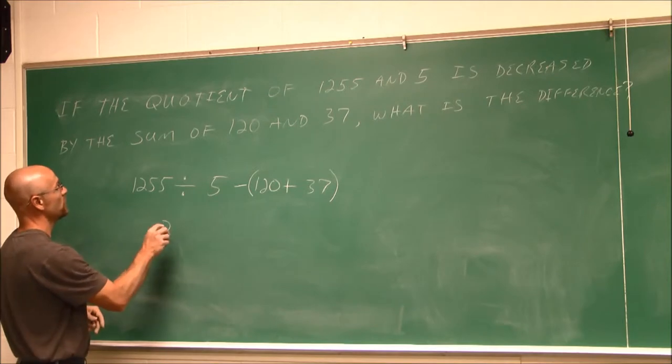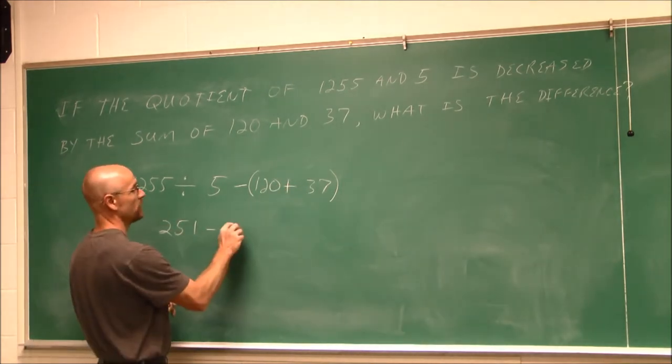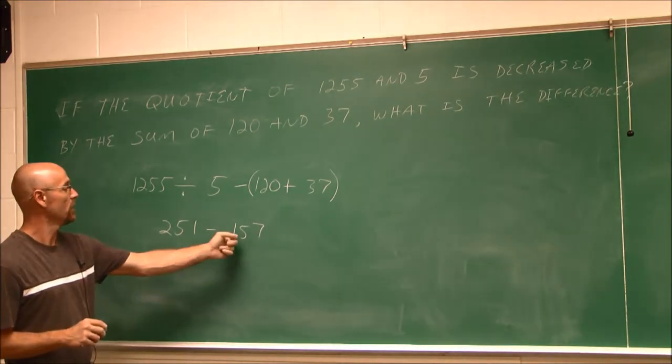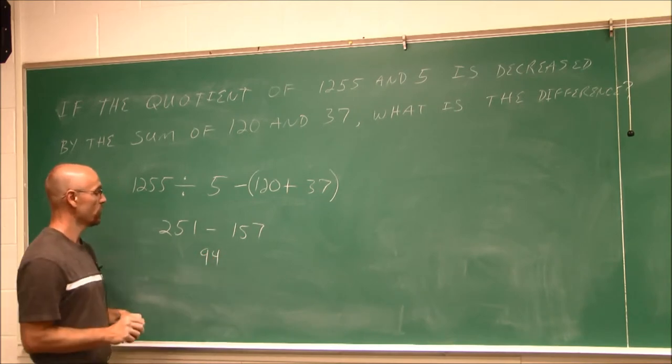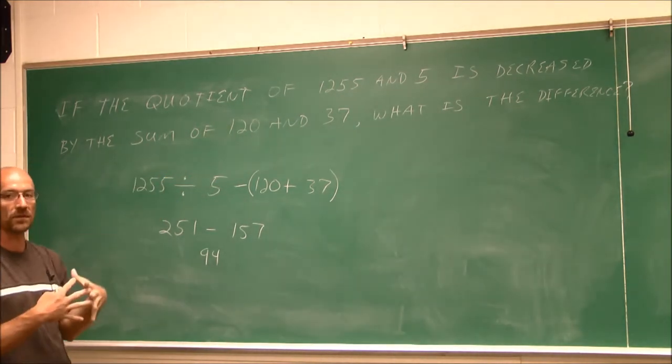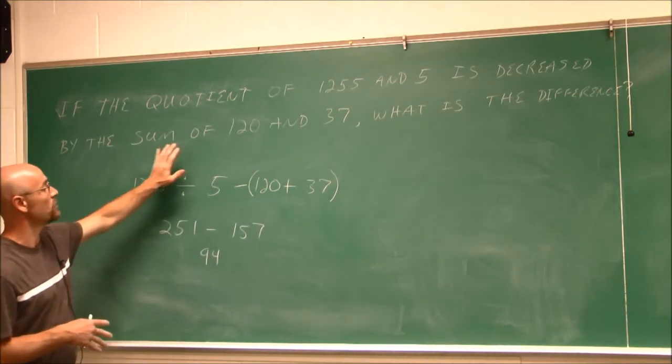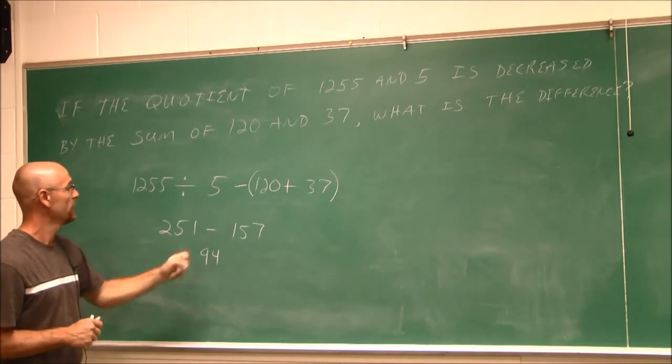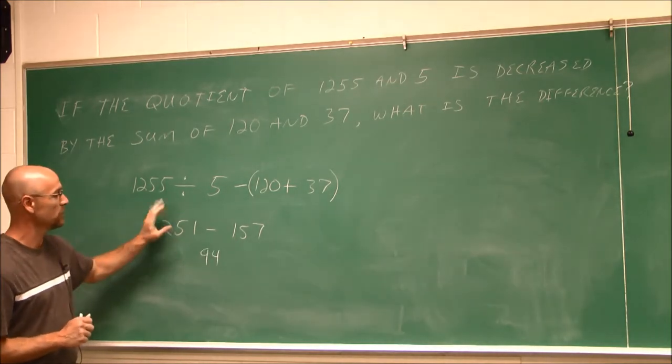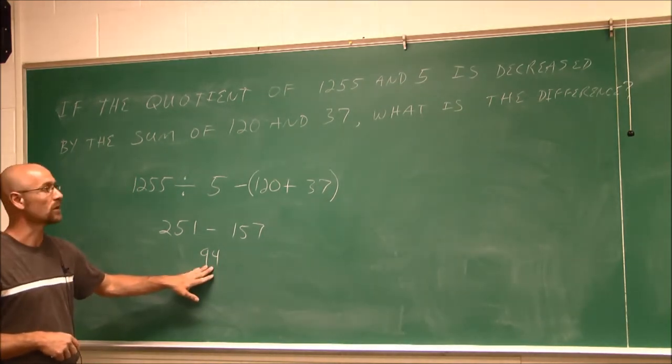1,255 divided by 5 is going to be 251. 120 and 37 is 157. And the difference of these two values, 251 minus 157, is 94. So this is my value. And if we look at our numbers, well, we had 1,255 divided by 5. When we divide, our number is getting smaller. So we get this value. It makes sense to me. 120 and 37, we're summing those together. And 157, I'm pretty confident with that. And then finding the difference of these two numbers. If I just look at them, if I just estimate it, 251 minus 157, well, this is about 250. And that's about 150. And that number is pretty close to 100. So I can feel confident that I did that work correctly.